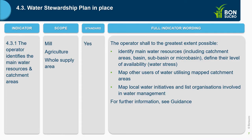We start with Indicator 4.3.1, the first of six indicators on this criterion: the operator identifies the main water resources and catchment areas. This applies to mill, agriculture, and especially also the whole supply area. The idea is to identify, to the greatest extent possible, water resources including catchment areas, basin, sub-basin, and micro-basin — the level of availability or water stress — to map other uses within the catchment and to map local water initiatives, listing the organizations involved in water management.